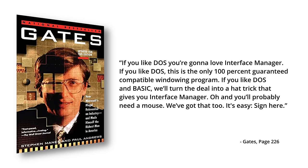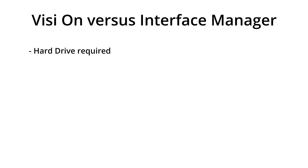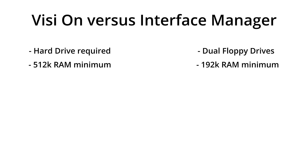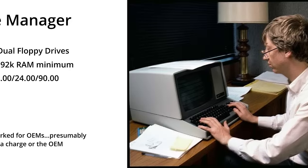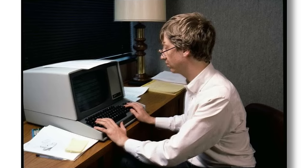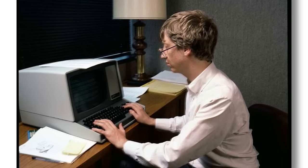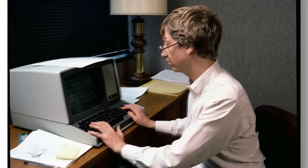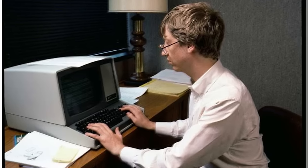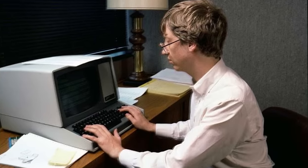Almost every bullet point feature of Interface Manager was specifically designed to undercut Visi On. Visi On required a hard drive, whereas Interface Manager could allegedly run on the two standard floppy drives every IBM compatible came with. Visi On required a lot of RAM; Interface Manager would supposedly only need 192k. Visi On was expensive; Microsoft would throw Interface Manager in for basically free with many clone MS-DOS deals — the biggest licensors got it for $8 a system or $24 a copy, while smaller manufacturers paid $90 a copy if they committed to a $20,000 commitment. It was cutthroat marketing at its finest and was technically illegal under antitrust law, which forbids tying the purchase of one dominant product to another. However, Microsoft somehow managed to stay just on the right side of not explicitly saying cloners needed to license Interface Manager in order to get MS-DOS, and got away with it.